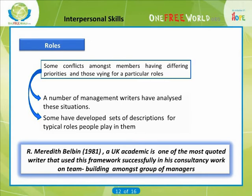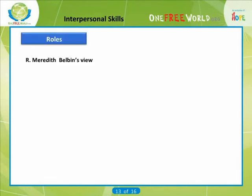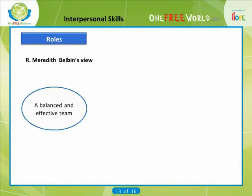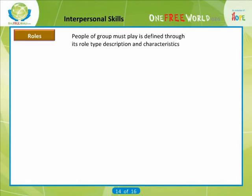One of the most widely quoted of these was developed by UK academic R. Meredith Belbin. He went on to use this framework successfully in his consultancy work on team building amongst groups of managers. Belbin's view was that in order for a group to become a balanced and effective team, the people within the group must play eight roles between them. The eight roles are defined through their role type, description, and characteristics.